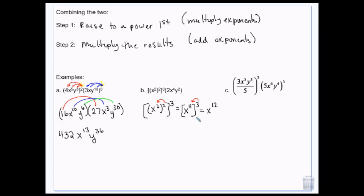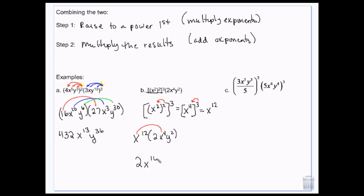That's this first part, and then I still have this extra part here to multiply by. The 2 has nothing to multiply with so it just stays a 2. x to the 12th times x to the 4th get added — so 12 plus 4 is 16. And then the y squared just stays y squared.